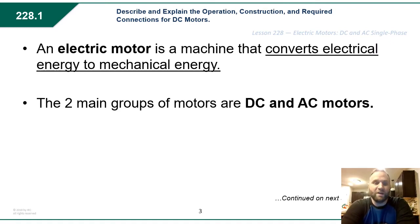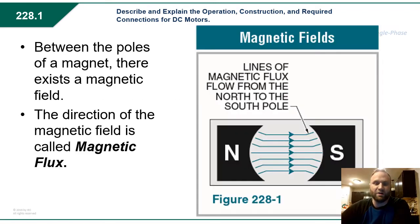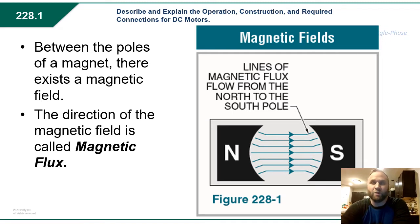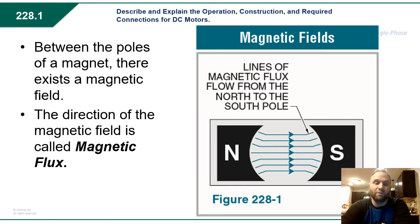An electric motor is a machine that converts electrical energy into mechanical energy. The two main groups of motors are DC and AC motors. DC motors run off of a magnetic field. This magnetic field could either be a permanent magnet or an electromagnet, depending on the size and make of the motor. Either way, a DC motor runs on the magnetic lines of flux from north to south pole between the poles of a magnet.